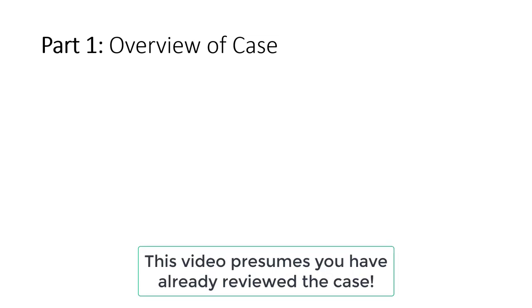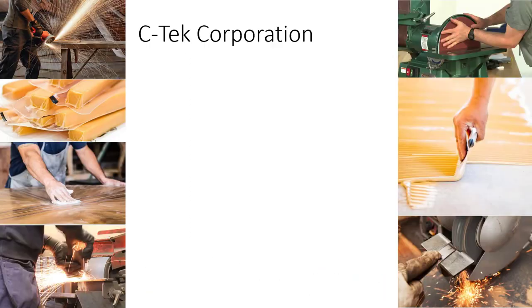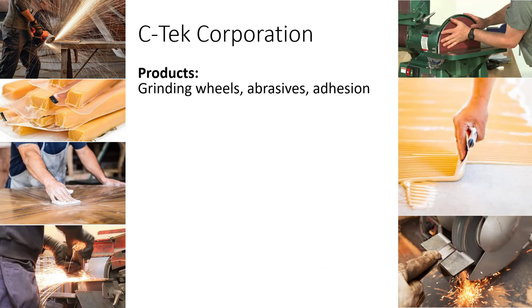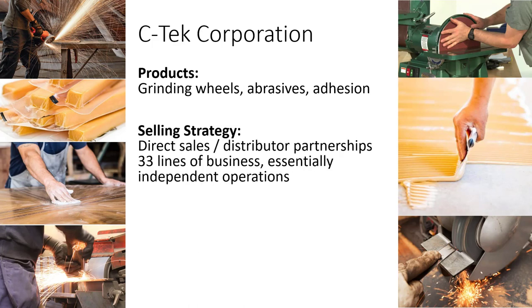Since we're mostly going to be using the CTEC Corporation case as a way to learn about resource allocation optimization, let me give you a brief overview. CTEC Corporation is a company that sells grinding wheels, abrasives, and adhesive products. Their primary selling strategy is direct sales and distributed partnerships. They have 33 lines of business, essentially acting as independent operations.